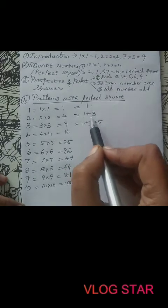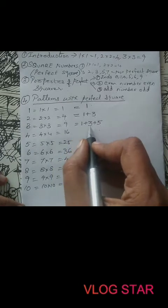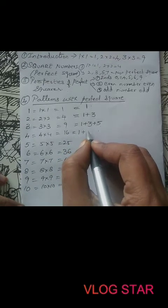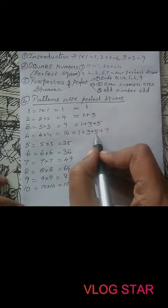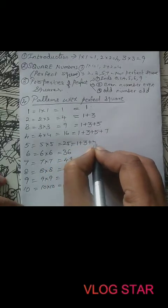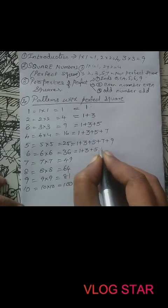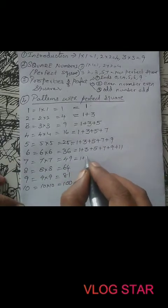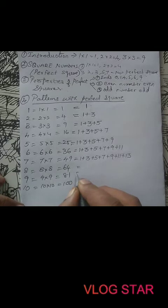We can identify the pattern: 1 is a sum of one odd number. 4 is the sum of the first two consecutive odd numbers: 1 plus 3. 9 is the sum of the first three consecutive odd numbers: 1 plus 3 plus 5. Continuing, 16 can be written as 1 plus 3 plus 5 plus 7. Check: 1 plus 3 is 4, plus 5 is 9, plus 7 is 16. 25 can be written as 1 plus 3 plus 5 plus 7 plus 9. 36 is 1 plus 3 plus 5 plus 7 plus 9 plus 11, and 49 is 1 plus 3 plus 5 plus 7 plus 9 plus 11 plus 13.